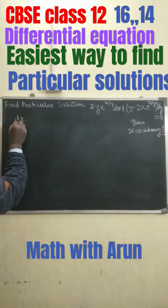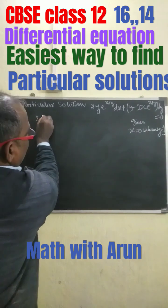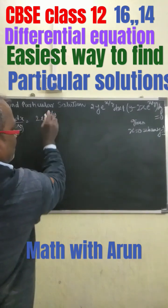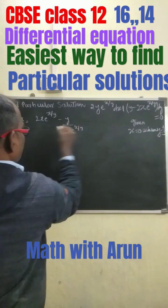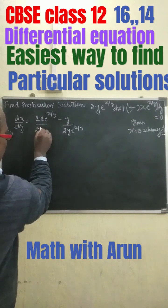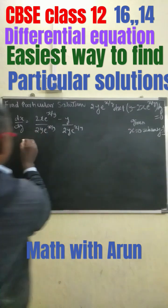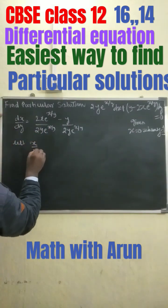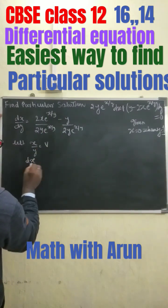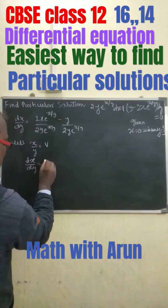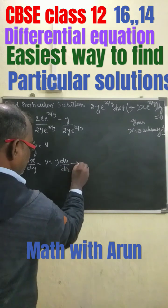We have dx/dy equals 2^(x/y) minus y, divided by 2y · 2^(x/y). So let x/y equal v, then we get dx/dy equals v plus y · dv/dx. This is equation number 1.